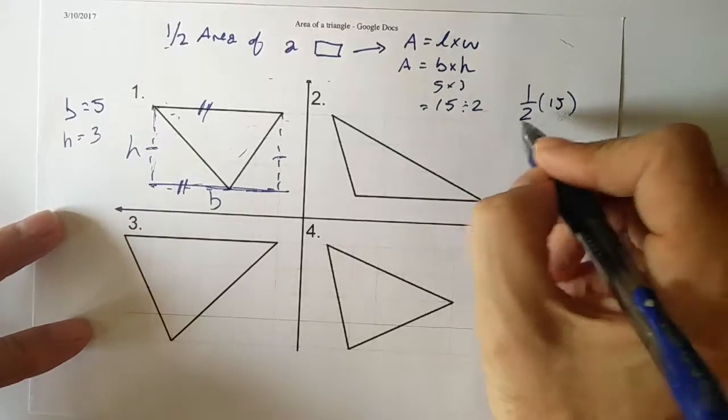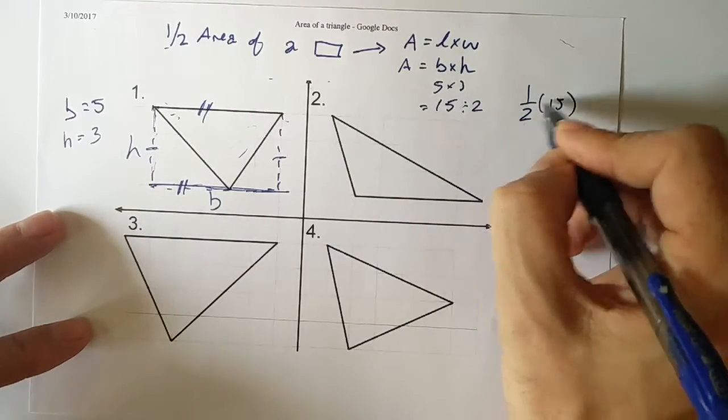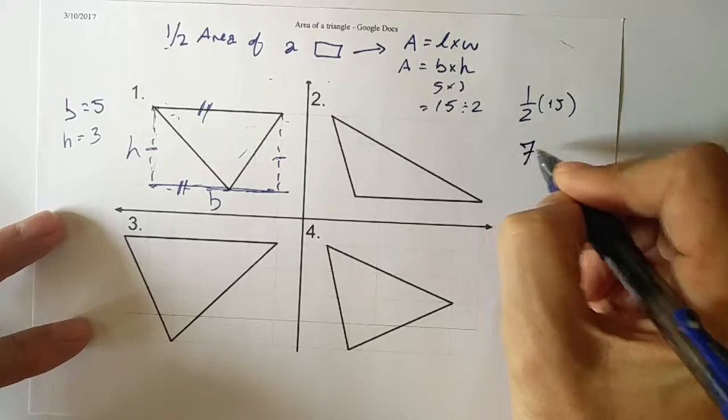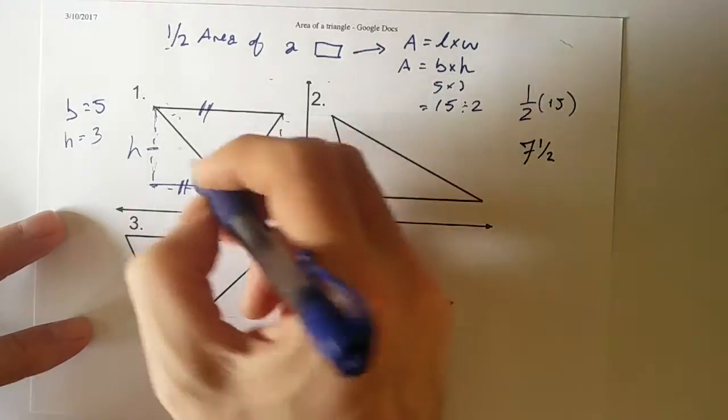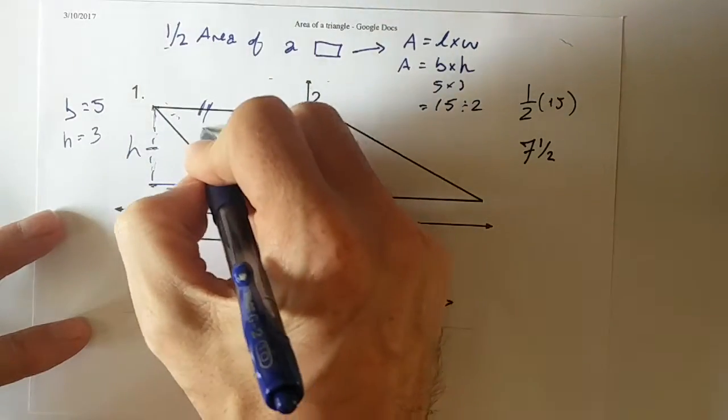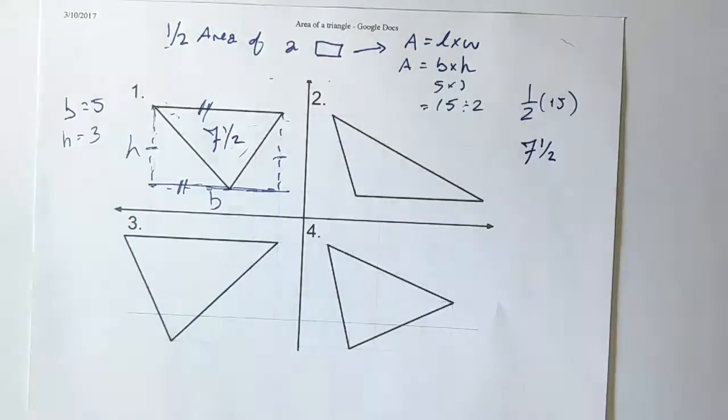So I'm going to have to have half of 15. Well, what's half of 15? I know that's 15 divide 2. How many 2s go into 15? 7 twos go into 15, and I'm left with 1 out of 2. So the area of this triangle is 7 and a half.